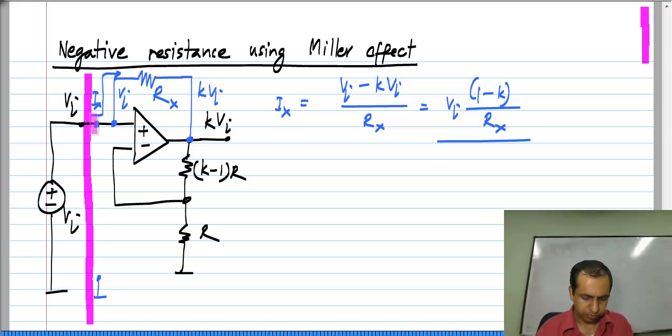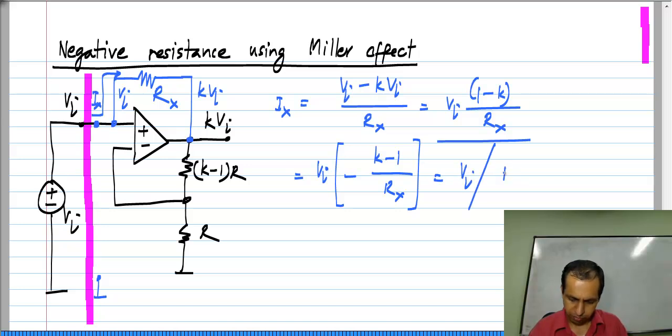You can see that this I x will actually be negative, because K will be greater than 1. We will assume K is more than 1, because we are making an amplifier of gain K. So this I x in this direction will be actually negative. The current in this direction is V i times minus K minus 1 by R x, which is V i divided by R x by K minus 1.